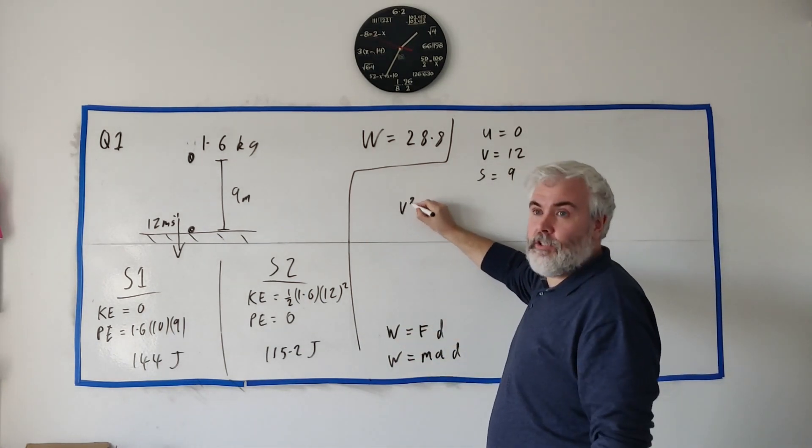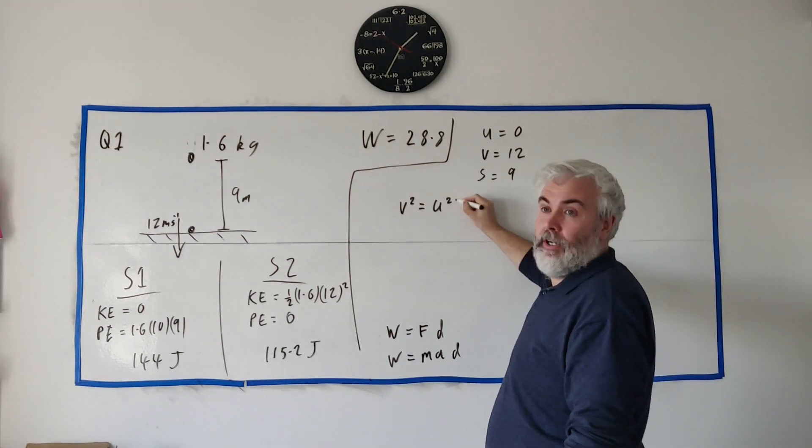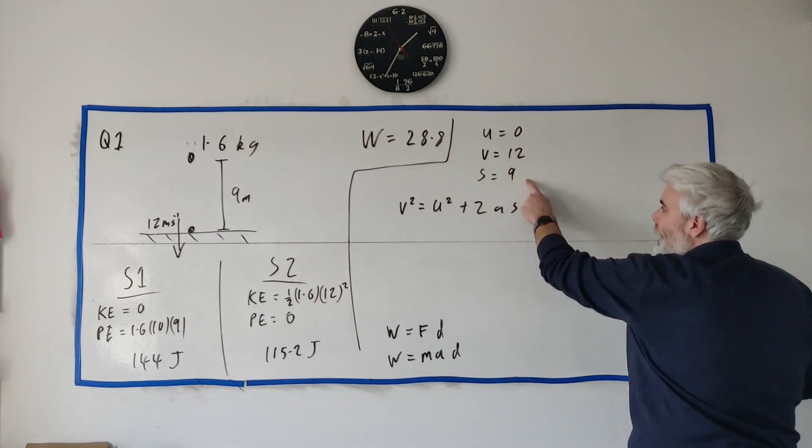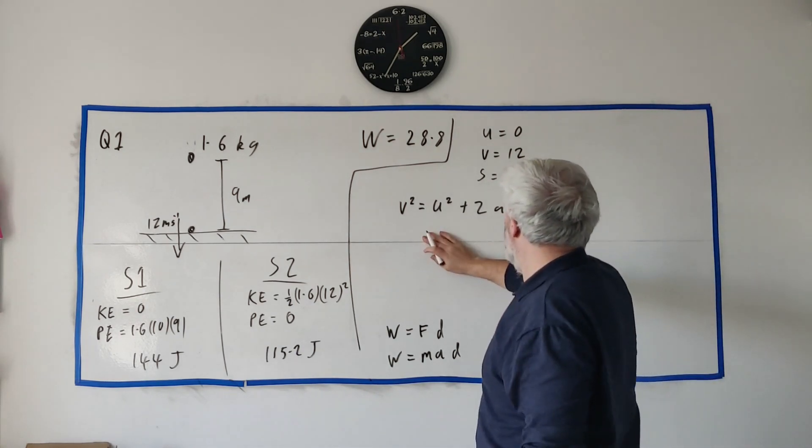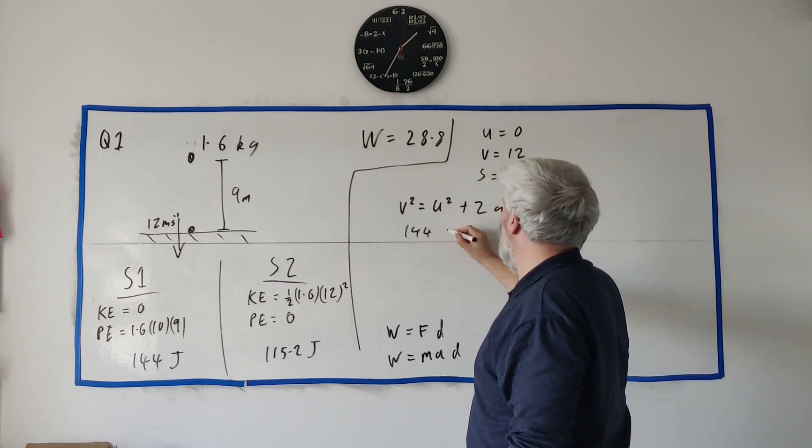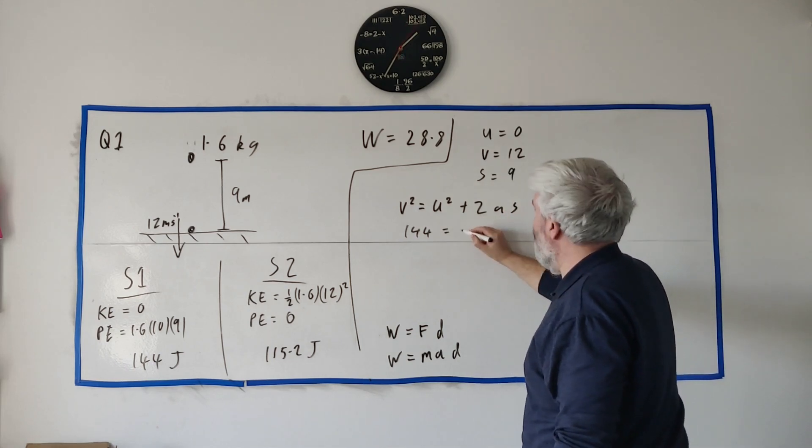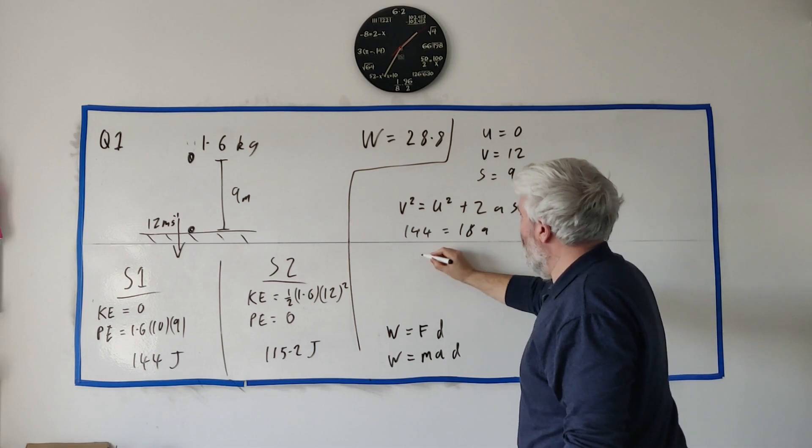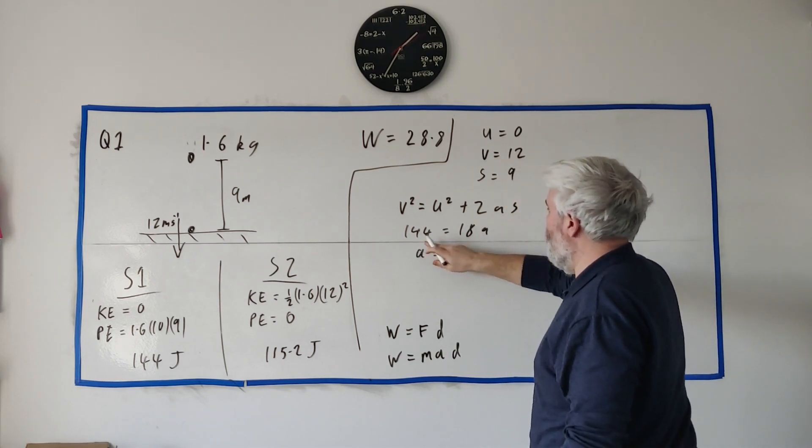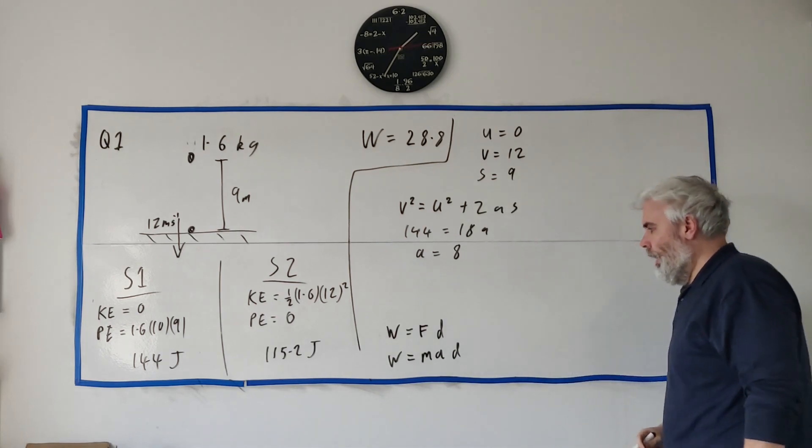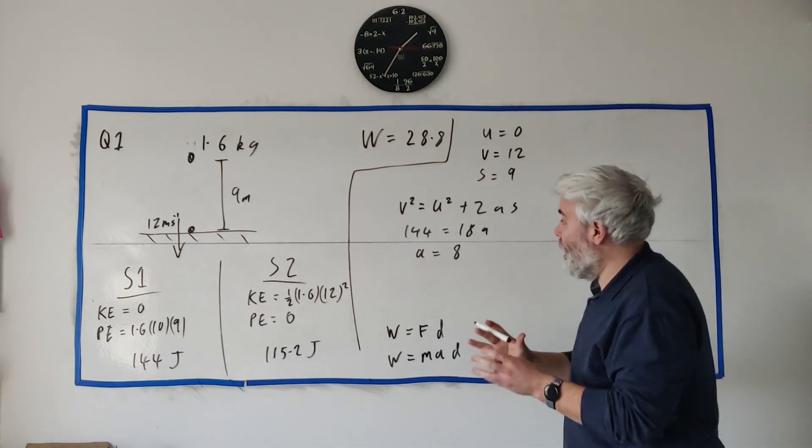Which formula is that? That would be v squared equals u squared plus 2as. I know u, v and s and I just want a. So 144 equals 2 times 9 which is 18a. a equals 144 divided by 18 is 8.